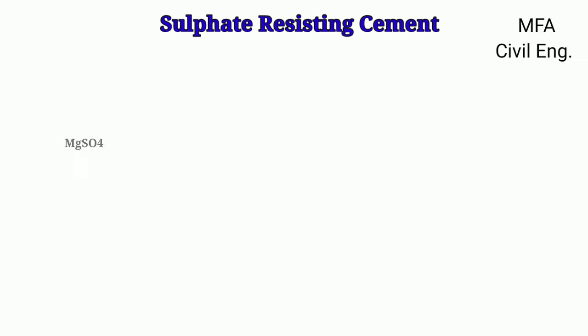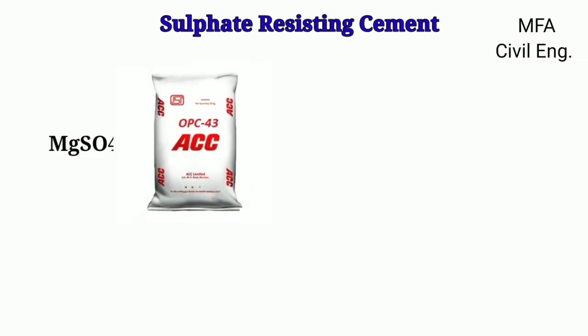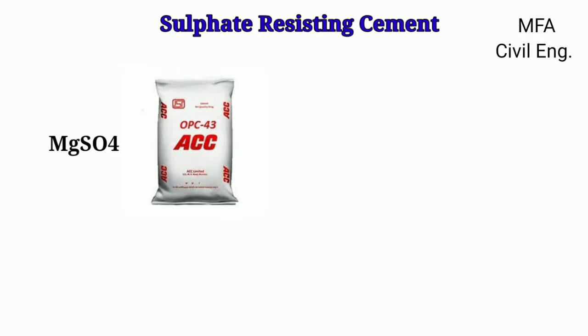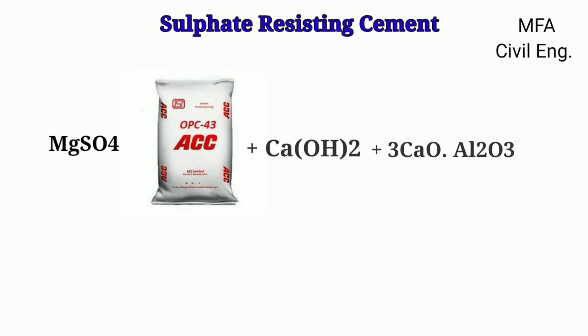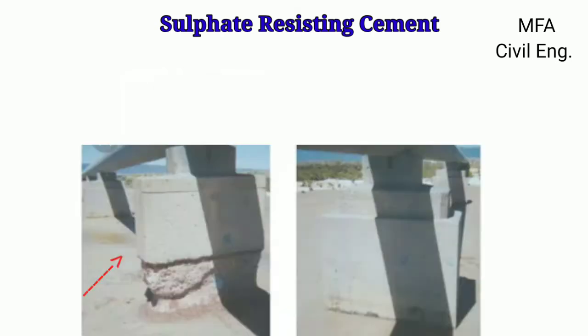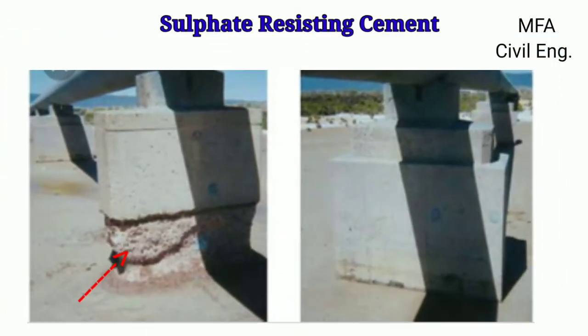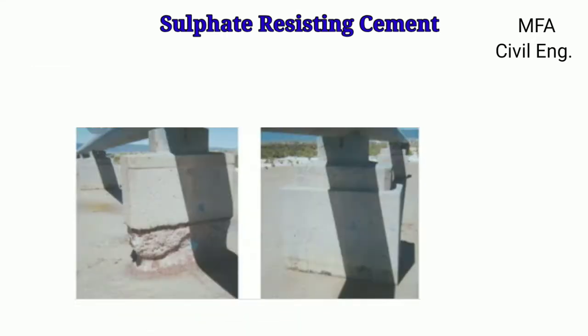Sulphate, especially magnesium sulphate, attacks ordinary Portland cement when it is in dissolved form. It combines with free calcium hydroxide and calcium aluminate, causing expansion and disruption of concrete. This phenomenon is known as sulphate attack.